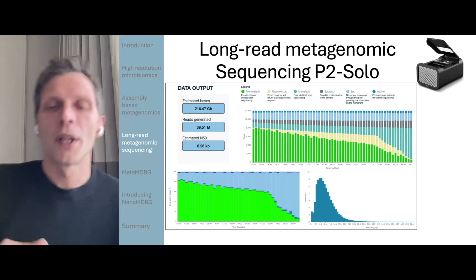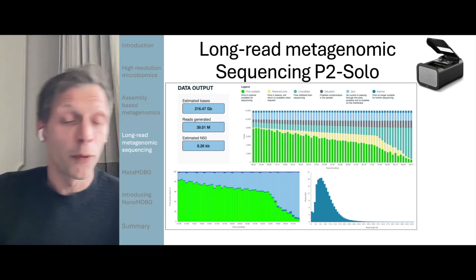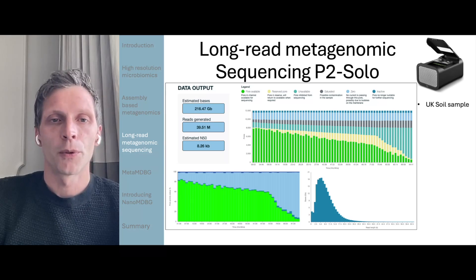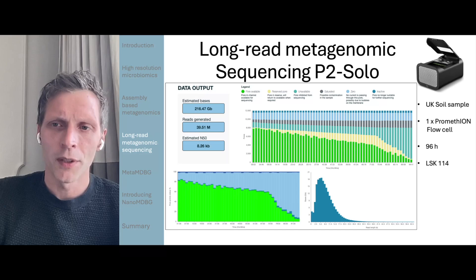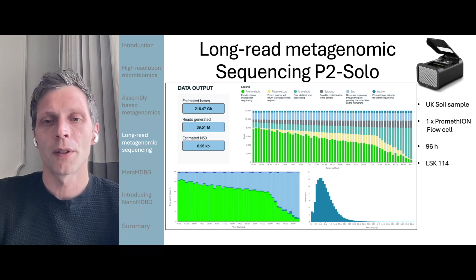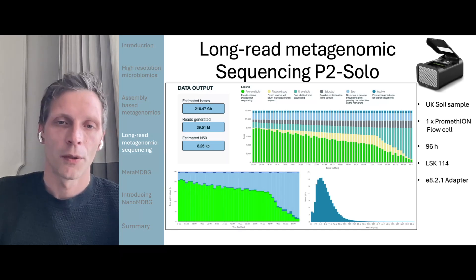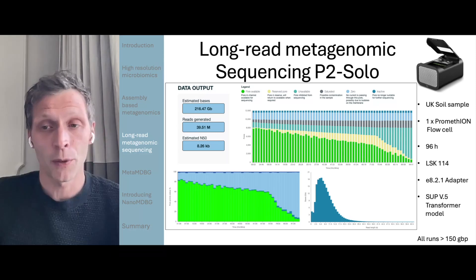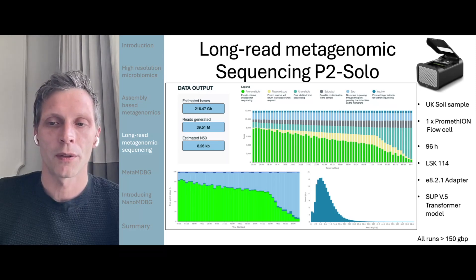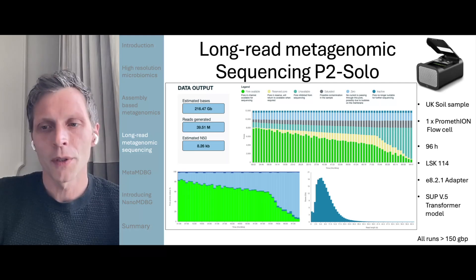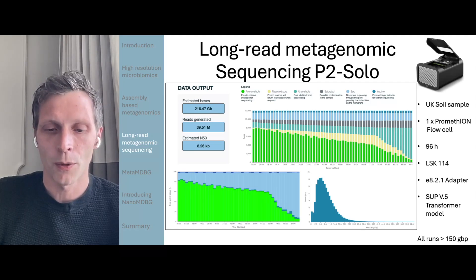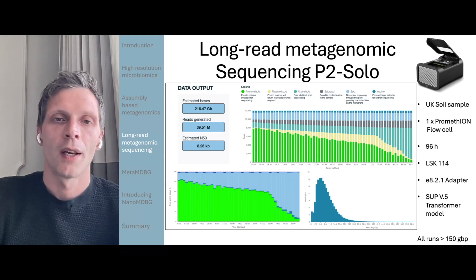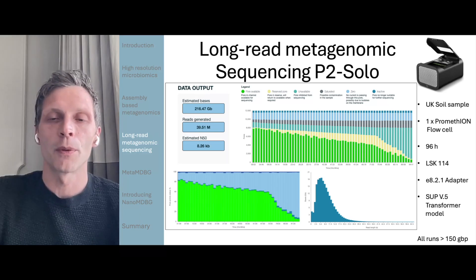So how do these perform on a sequencing device? Here we've got one of our best runs — a UK soil sample. We pulled 216 gigabases off of a single Promethion flow cell, ran it for 96 hours using LSK114 and Q20 chemistry using the 8.2.1 adapter, and then base-called everything with the V5 SUP transformer model. Whilst this is our best run, all of the runs we've done on Promethion flow cells from these extraction techniques are all north of 150 gigabases — so it's a repeatable result.